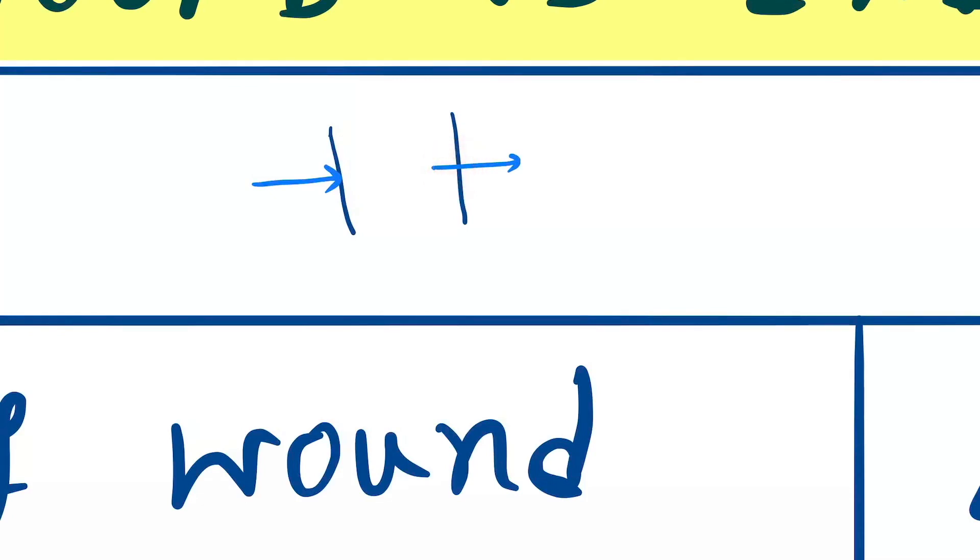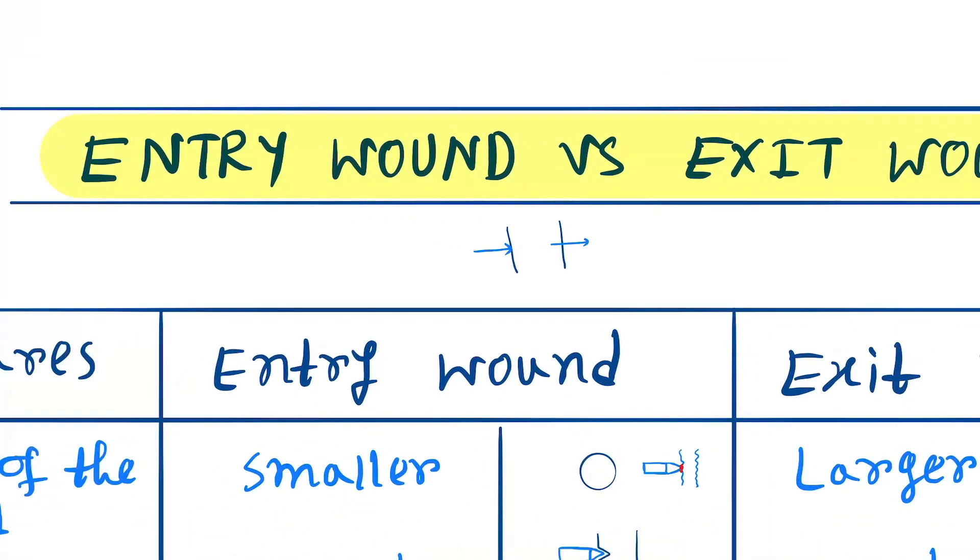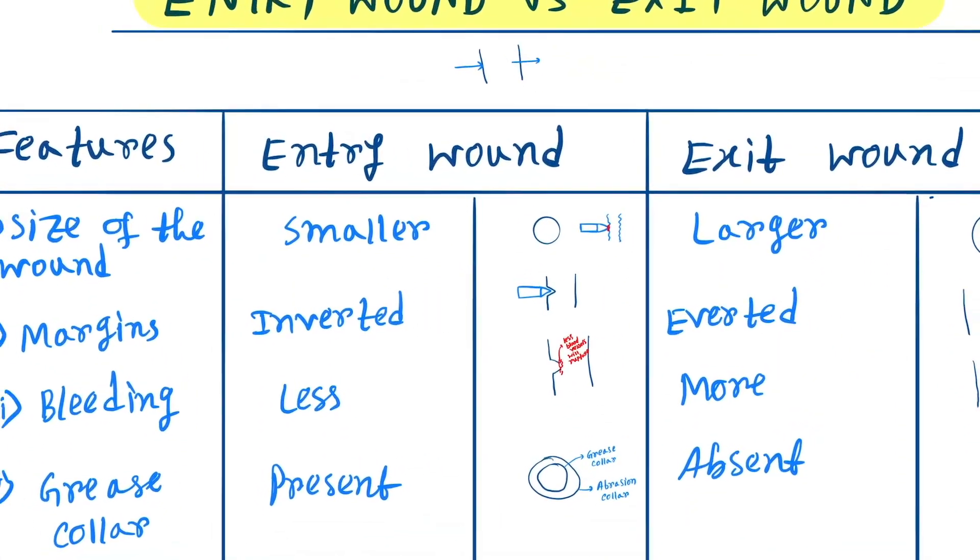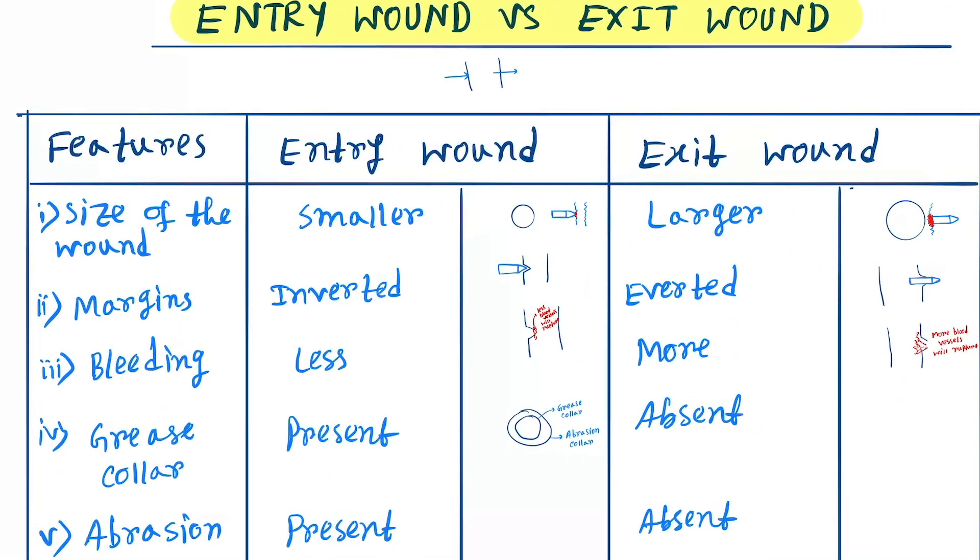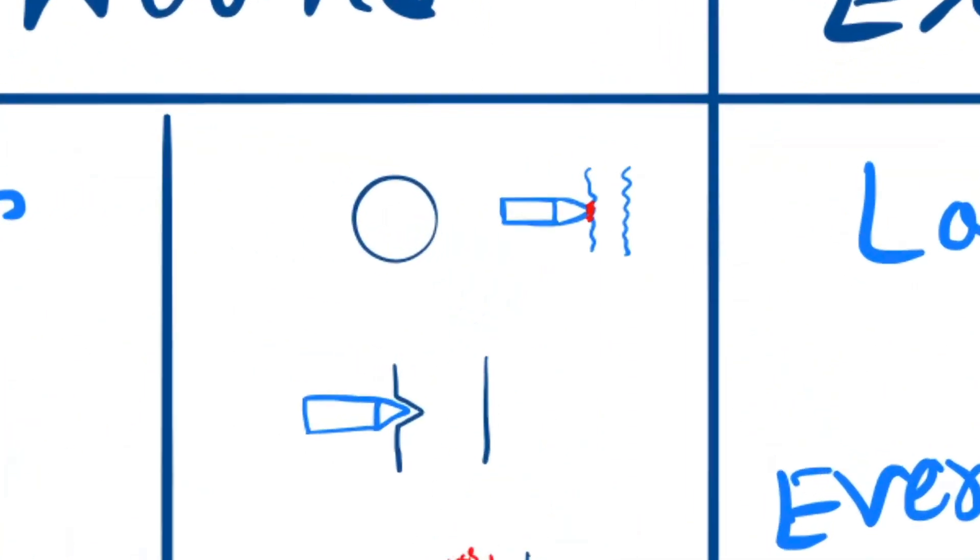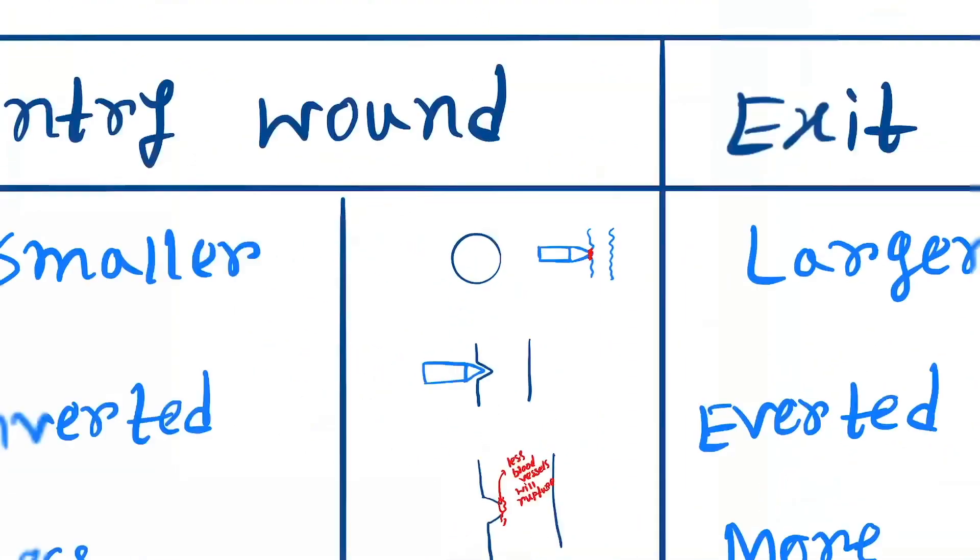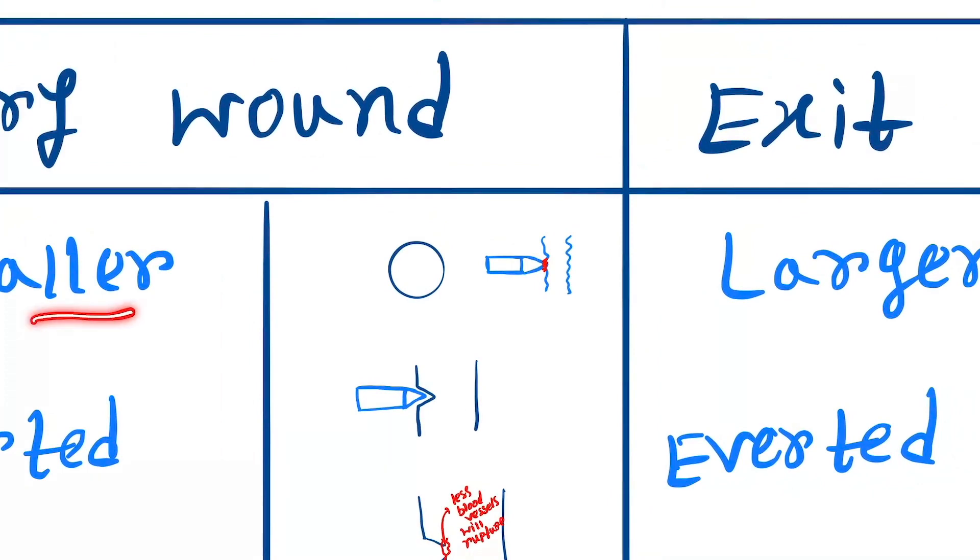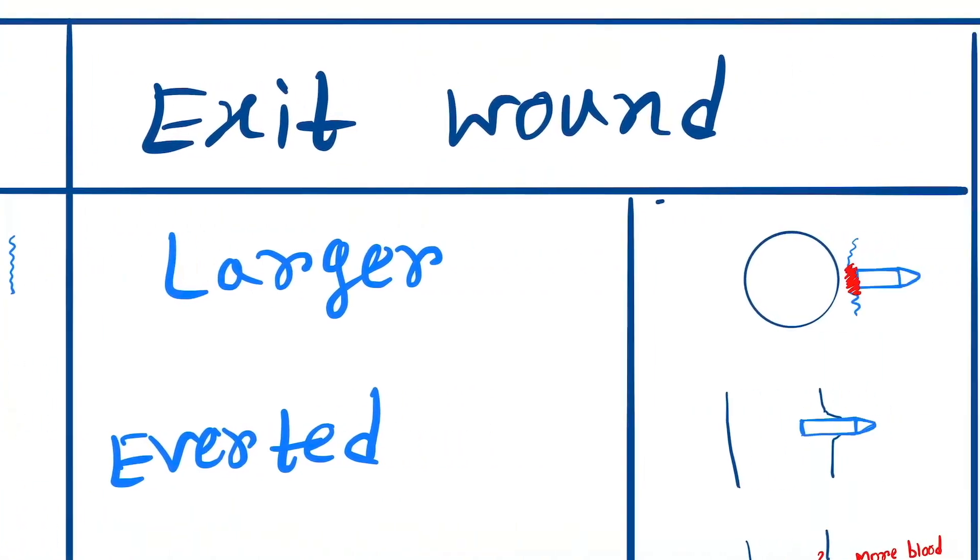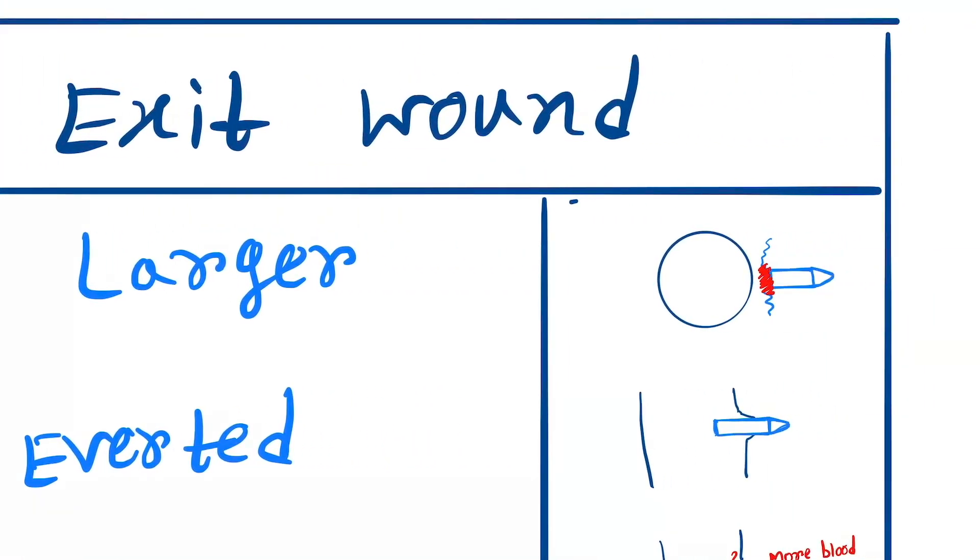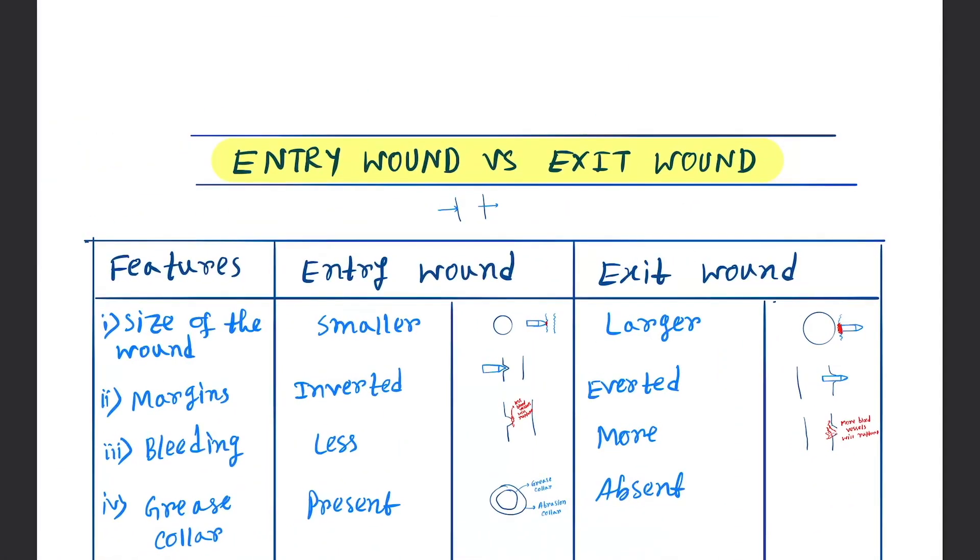Now let's see the features. First is the size of the wound. In case of entry wound, the size of the wound will be smaller. But in case of exit wound, it will be larger. Next is margins.